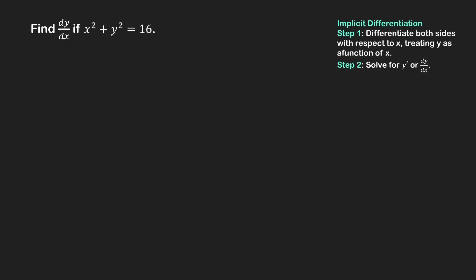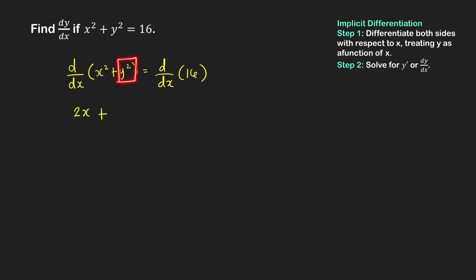Let's find the derivative of y with respect to x if x squared plus y squared equals 16. Step 1: differentiate both sides with respect to x. The derivative of x squared plus y squared equals the derivative of 16. The left-hand side gives 2x, plus the derivative of y squared with respect to x. Treating y as a function of x and using the extended power rule, that is 2y times dy over dx. The right-hand side equals 0, since the derivative of a constant is 0.